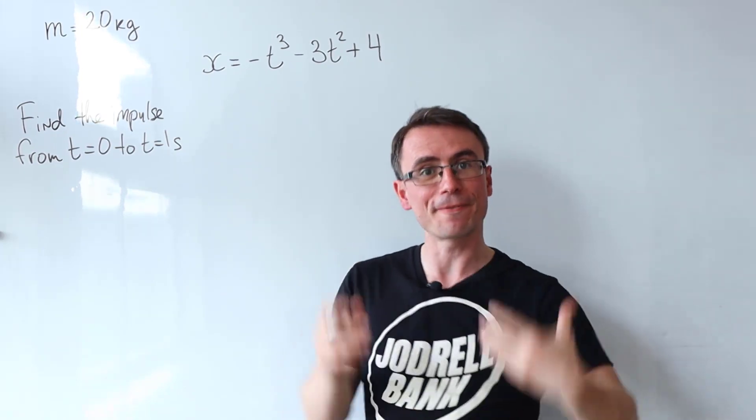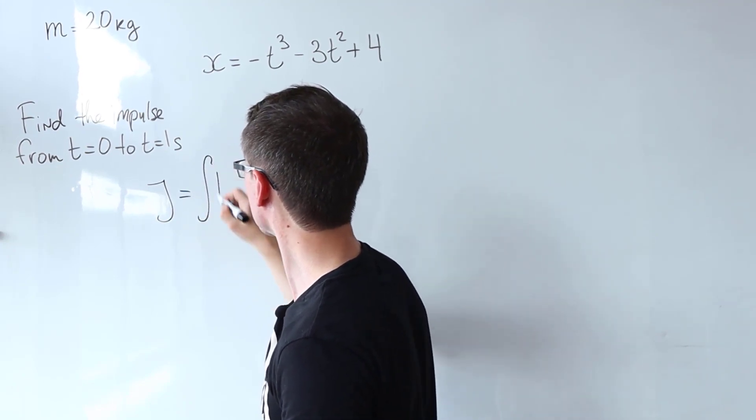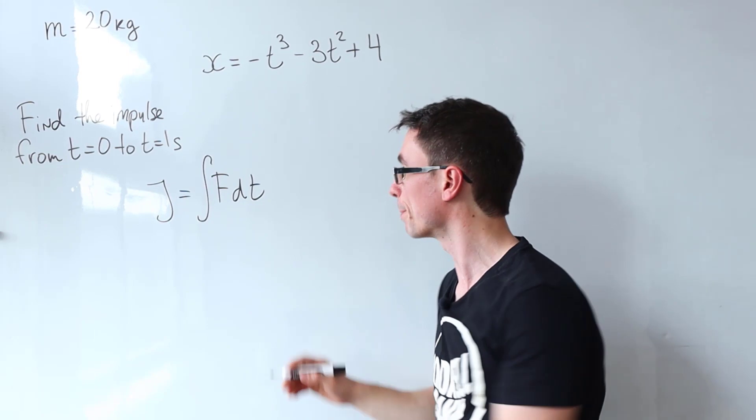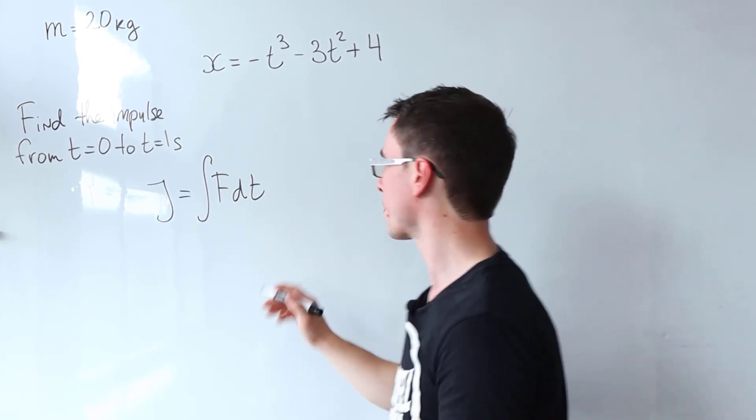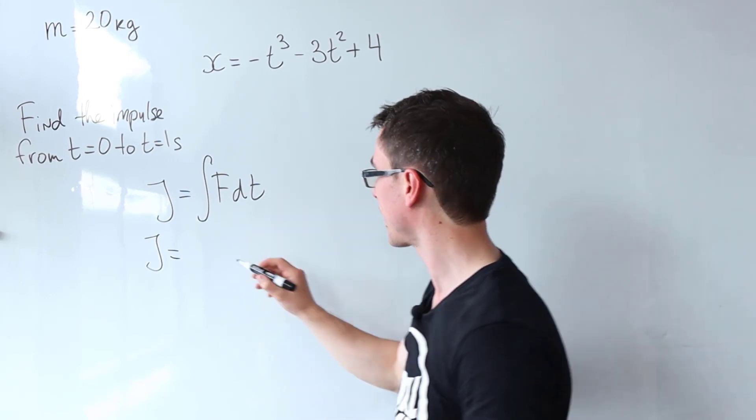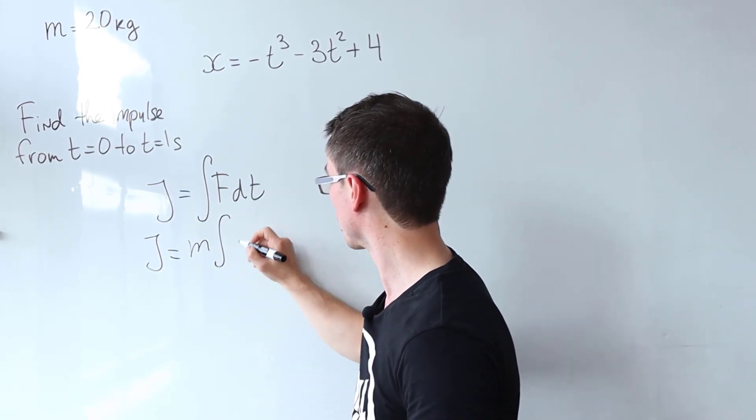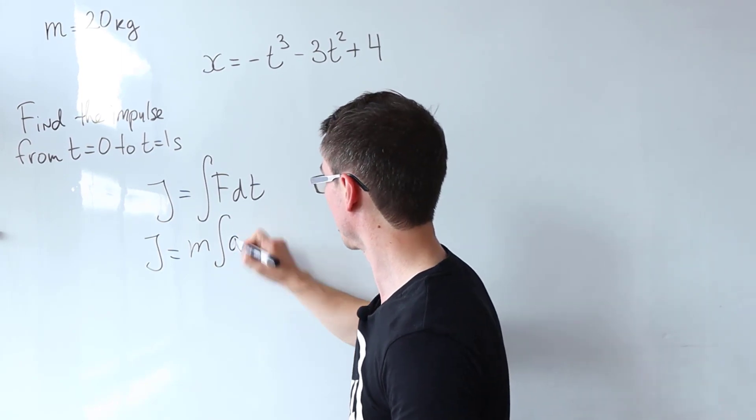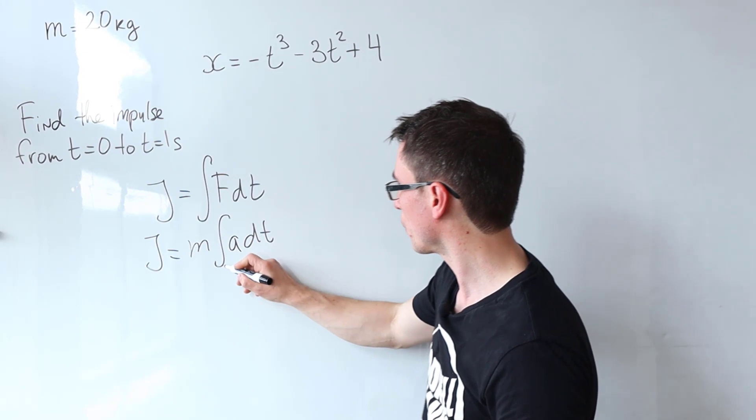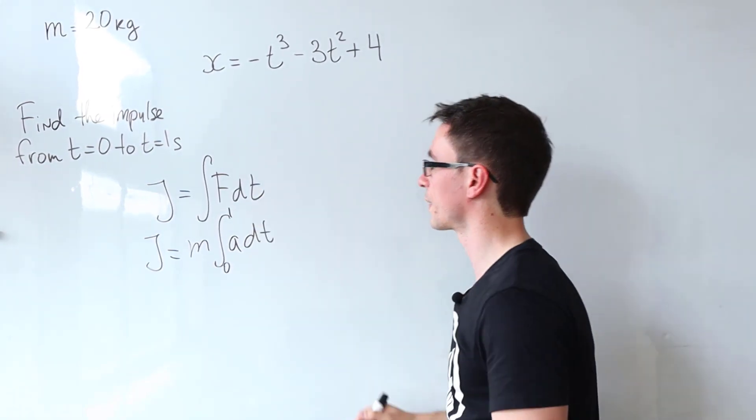Because the force varies with time, the impulse, let's just call that j, is actually the integral of the force with respect to time. Because force equals mass times acceleration and the mass is constant in this case, we can say that this equals m times the integral of the acceleration multiplied by dt. And this integral is going to be from t equals zero to t equals one second.